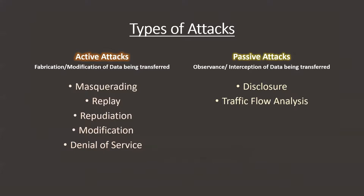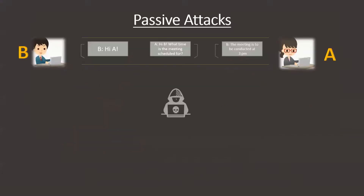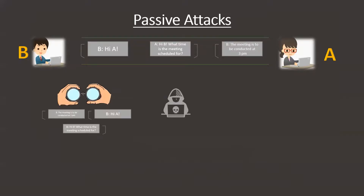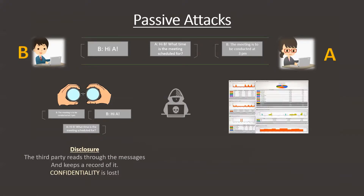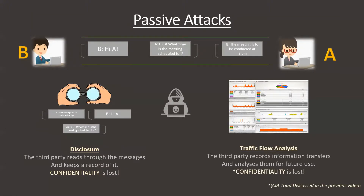Let us look at some examples. Two users A and B are communicating through some messages. The hacker, with malicious intent, watches over these messages without making any visible changes — this can be classified as disclosure. The other option for a passive attack is when the attacker analyzes the message transfers. In both cases, confidentiality of data is lost.